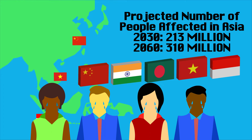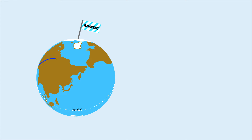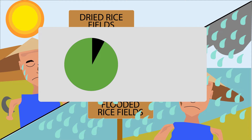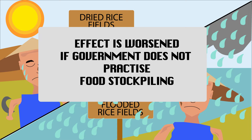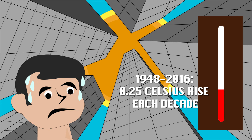Other than sea level rise, we would also face more intense weather patterns. Temperatures in the Arctic influence jet streams in the upper atmosphere, which affects the weather in other regions. This brings extreme weather events, such as increased rainfall and also droughts, to areas in parts of Asia. Singapore relies on imports for 90% of its food supply. Extreme weather conditions reduce food yield and may cause food shortages or an increase in food prices. In poorer communities, this effect is worsened if the government does not practice food stockpiling. Temperatures in Singapore rose at an average rate of 0.25 degrees Celsius per decade from 1948 to 2016, and are projected to increase by 1.4 to 4.6 degrees Celsius by the next century.